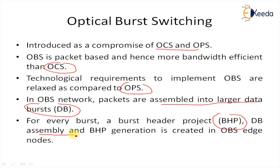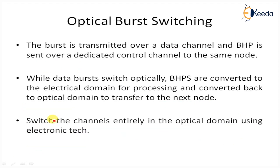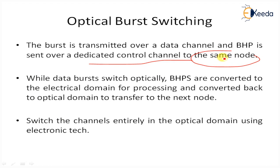The data burst assembly and BHP generation is performed at the OBS edge node. The burst is transmitted over a data channel and the BHP is sent over a dedicated control channel to the same destination node. OBS provides enhanced features compared to both OCS (optical circuit switching) and OPS (optical packet switching).